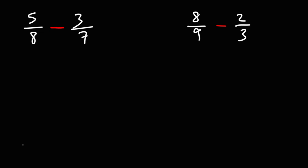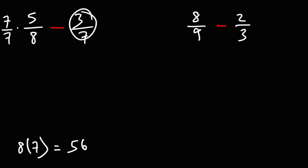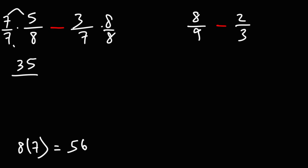So let's get common denominators. Let's multiply 8 and 7, so the common denominator will be 56. I'm going to multiply the first fraction using the denominator of the second, so I'm going to multiply it by 7 over 7. And the second fraction, I'm going to use the denominator of the first, so I'm going to multiply by 8 over 8. 7 times 5 is 35, and 7 times 8 is 56. 3 times 8 is 24, and 7 times 8 is 56.